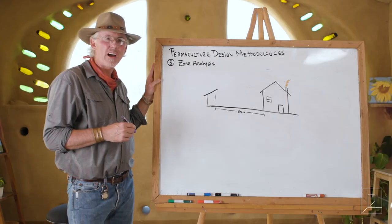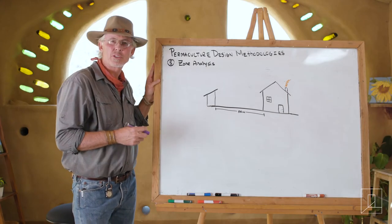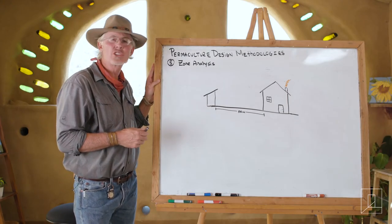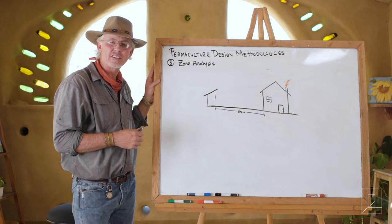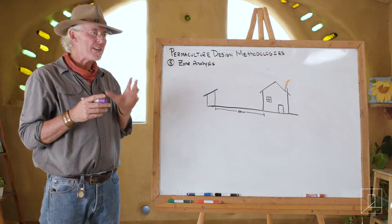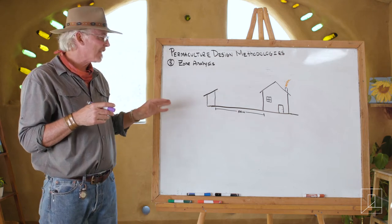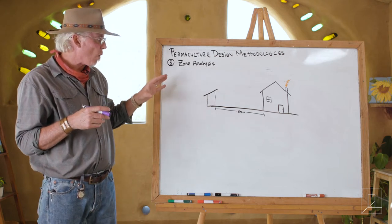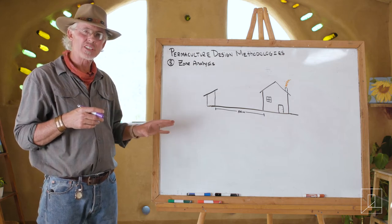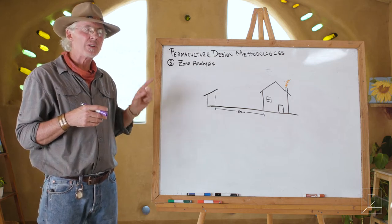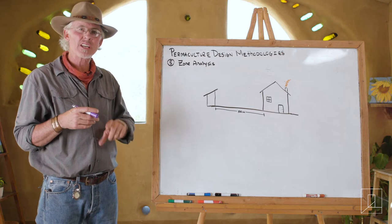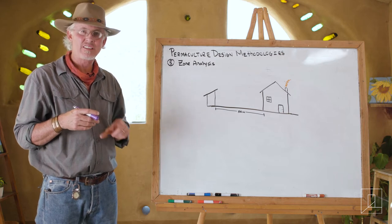Looking at number five of the permaculture methodologies, we have what we call zone analysis. Zone analysis is basically looking at how you place the elements in your system in relationship to how much time it takes to tend to them.